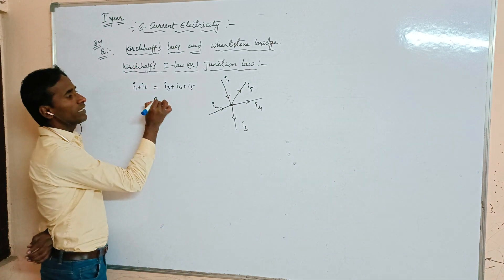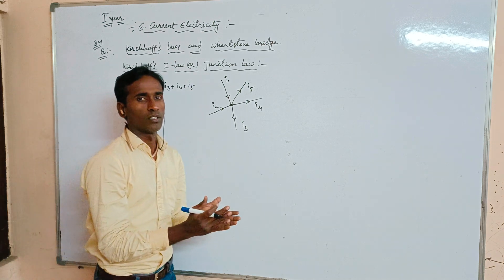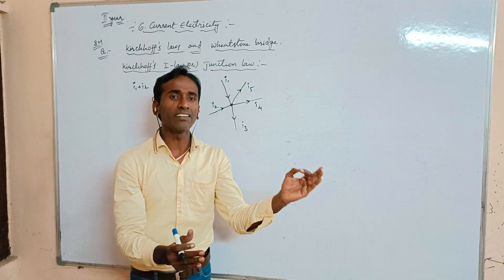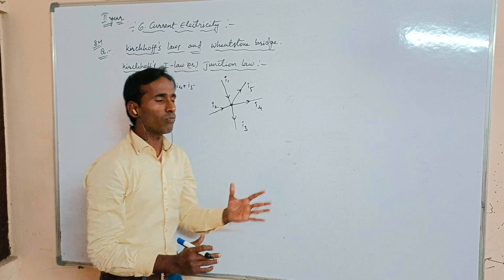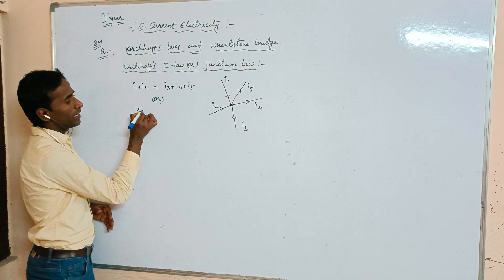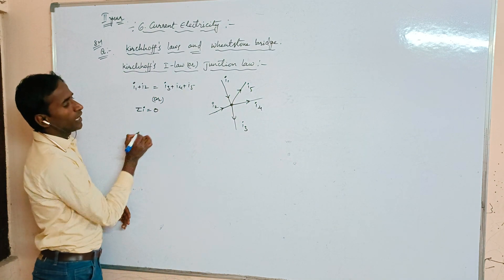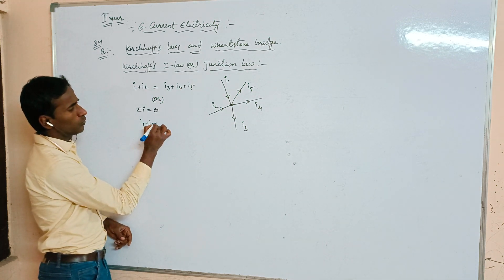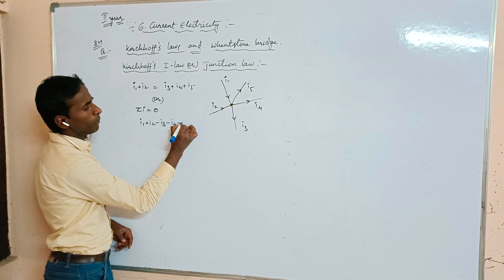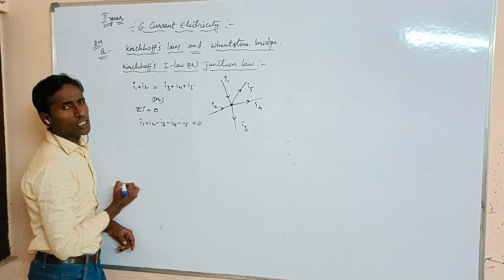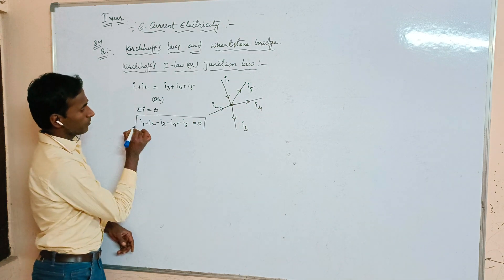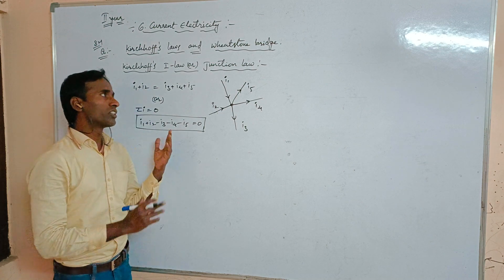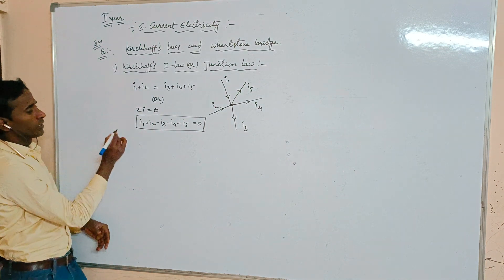For the direct definition: the algebraic sum of total current meeting at a junction is equal to zero, that is sigma I = 0. We can write: i1 + i2 - i3 - i4 - i5 = 0. This is Kirchhoff's First Law definition.